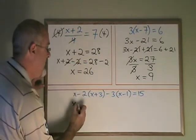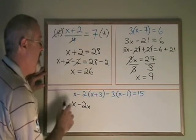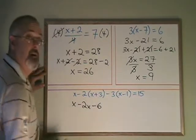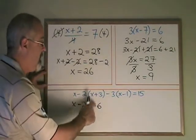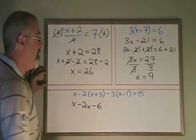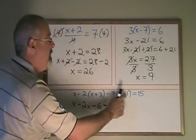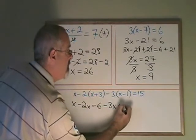Minus 2 times x is minus 2x. And minus 2 times positive 3 is minus 6. It seems like the plus turned into a minus here. Minus 3 times x is minus 3x. And minus 3 times minus 1 is plus 3.